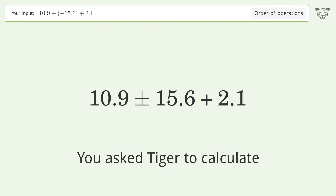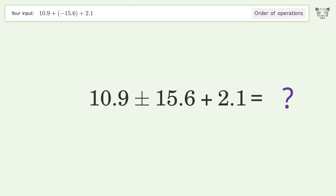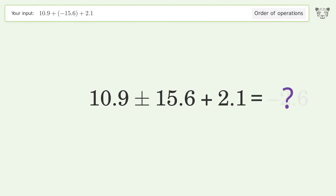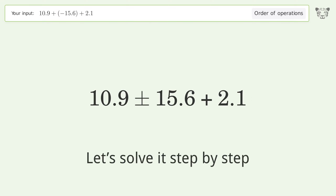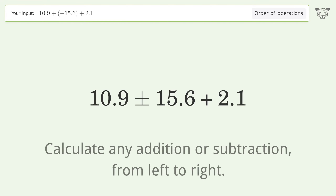You asked Tiger to calculate. This deals with the order of operations. The final result is negative 2.6. Let's solve it step by step. For addition or subtraction, we calculate from left to right: minus, plus, minus.